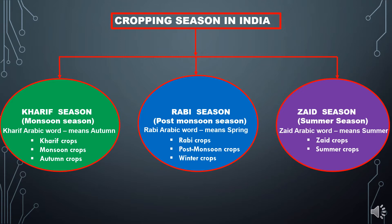First we will discuss about Kharif season. Kharif is an Arabic word which means autumn, because the harvesting season coincides with the beginning of autumn. Kharif season is also known as monsoon season because the crop passes through the southwest monsoon, which fulfills the irrigation requirement of the crops. The crops grown in Kharif season are known as Kharif crops, monsoon crops, or autumn crops.